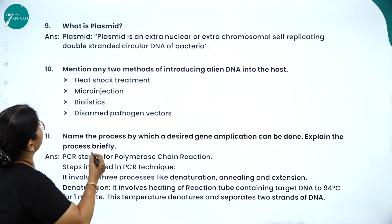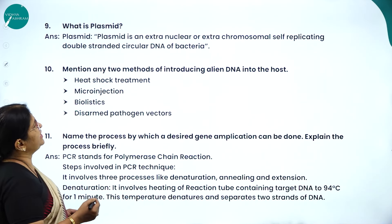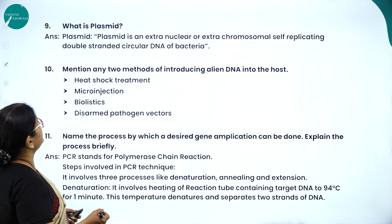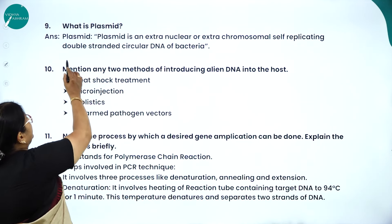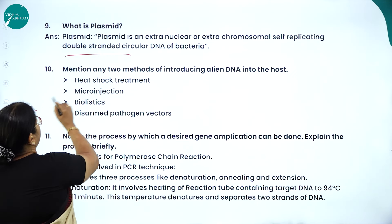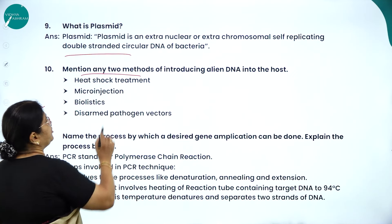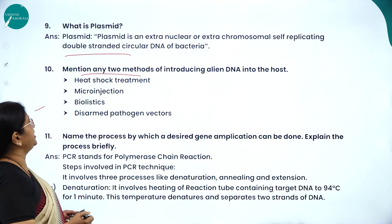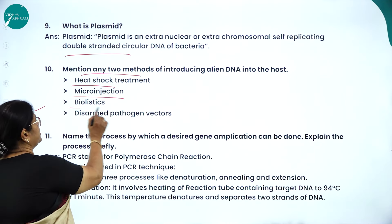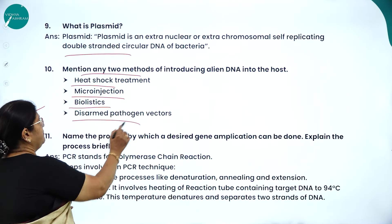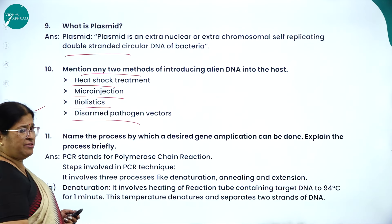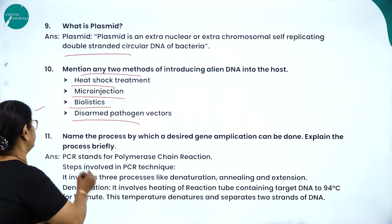Plasmid is an extra-nuclear or extra-chromosomal self-replicating double-stranded circular DNA of bacteria. Methods of introducing alien DNA include: heat shock treatment, microinjection method, biolistic method, and disarmed pathogen vectors.